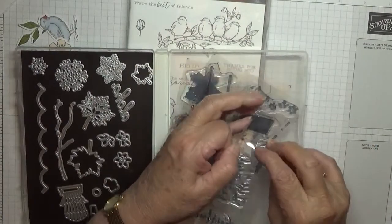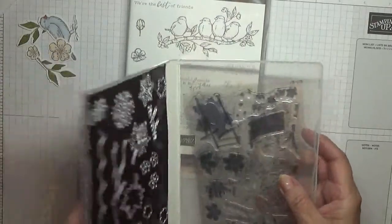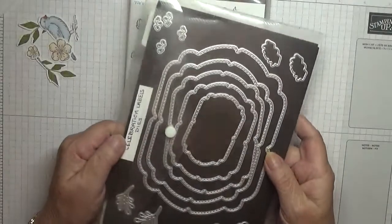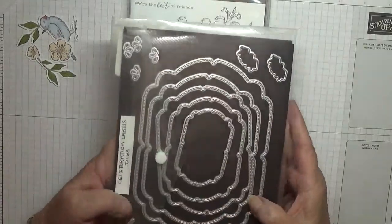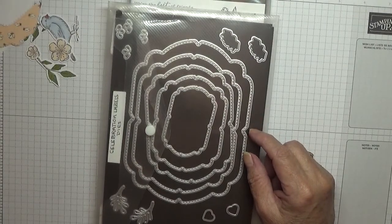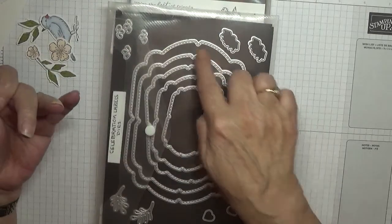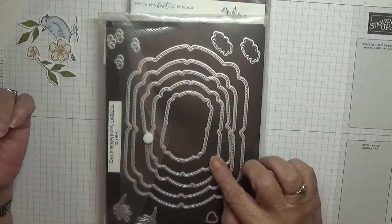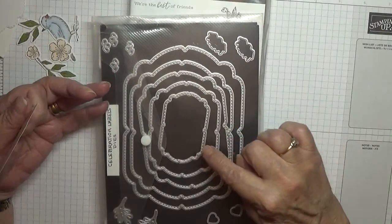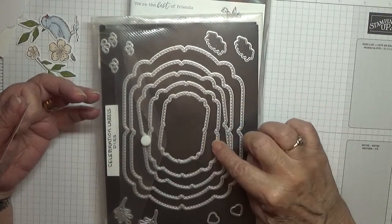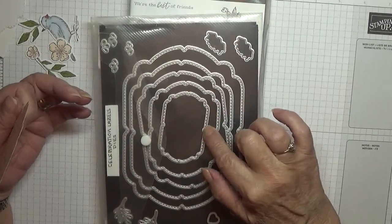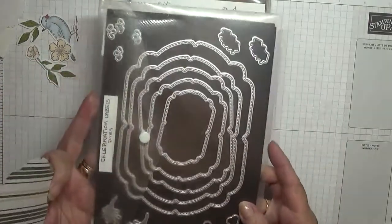I wanted a big sentiment, so I thought I'd use that. I've also used Celebration Label Dies, these ones, and I've used the second one in and the fourth one in. So I've used two and four of these dies, being the smallest one being the first die number one.